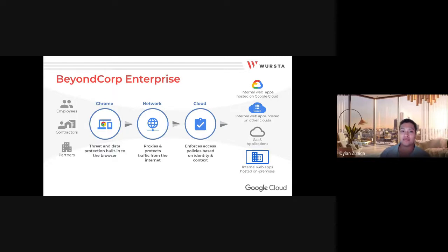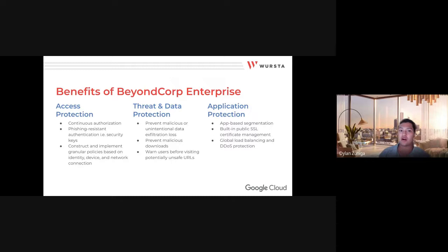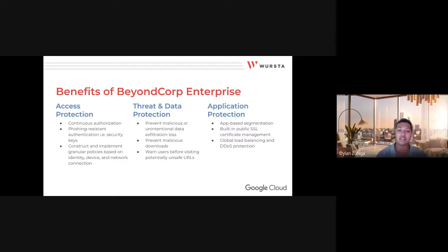Now let's continue with the benefits of BeyondCorp Enterprise and how we make customers more secure. We offer end-to-end continuous protection in real time, across three categories. Zero Trust starts with access protection: BeyondCorp Enterprise assures the user's identity via strong authentication and identity management, and ensures correct access with continuous authorization. Every interaction between a user and a protected resource is evaluated in real time against the resource's access policy to ensure users remain authorized. Every connection is authenticated, and we support strong phishing-resistant authentication with factors like security keys.